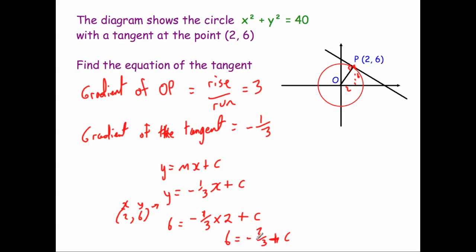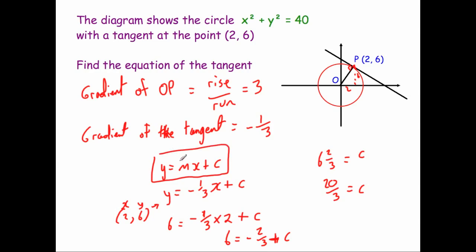Working that out: minus one third times two is minus two thirds, so we get 6 = −⅔ + c. Adding two thirds to both sides gives c = 6⅔, which as a top-heavy fraction is 20 over 3. So the equation of the tangent is y = −⅓x + 20/3 — that's where it crosses the y-axis.